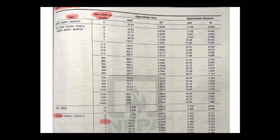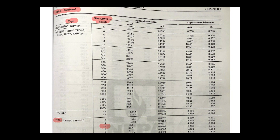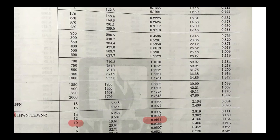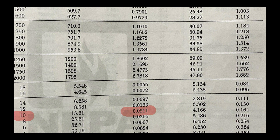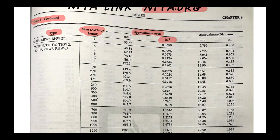I'll shrink this a bit so we can see the whole table. We're looking for the approximate area in square inches — not millimeters squared. If you pick up the millimeter numbers when the question asks for square inches, you'll get it wrong. Following across for THHN 10 AWG, we see the answer is 0.0211 square inches. Table 5 in Chapter 9 is a really important table.